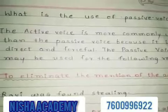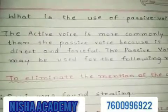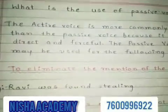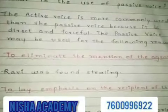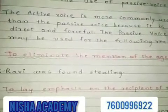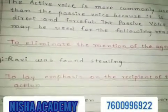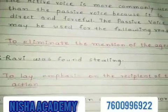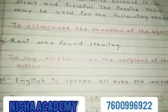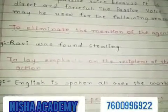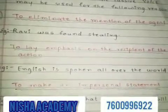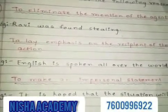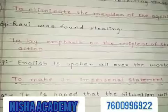First, to eliminate the mention of the agent — for example, 'Ravi was found stealing.' Second, to lay emphasis on the recipient of the action — for example, 'English is spoken all over the world.' Third, to make an impersonal statement — for example, 'It is hoped that the situation will improve.'